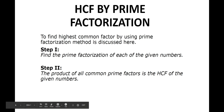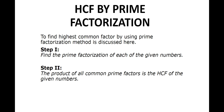Let's do HCF by prime factorization. There are two steps involved in it. Step 1: find the prime factorization of each of the given numbers. Step 2: the product of all common prime factors is the HCF of the given numbers.